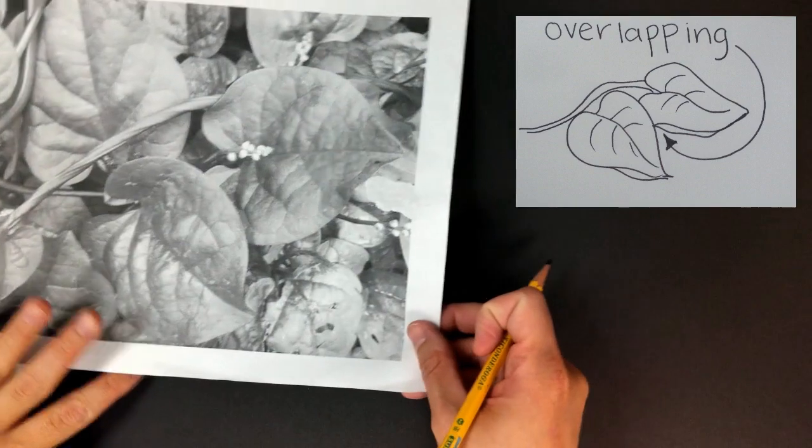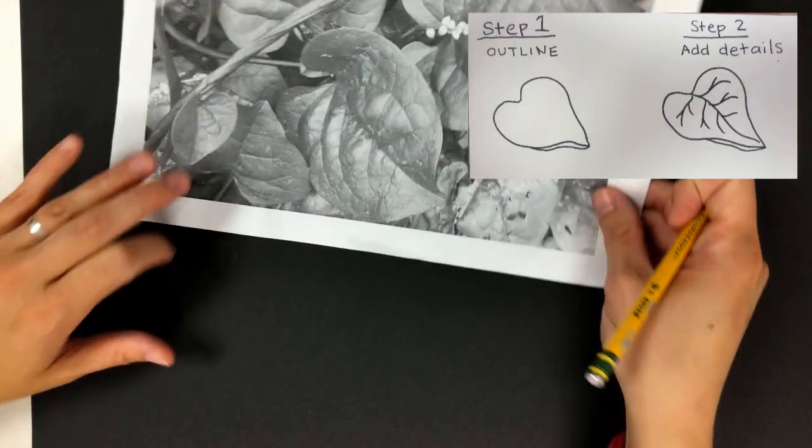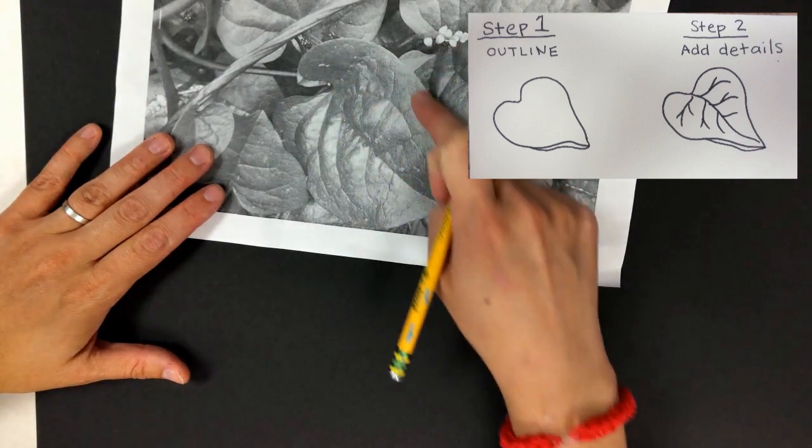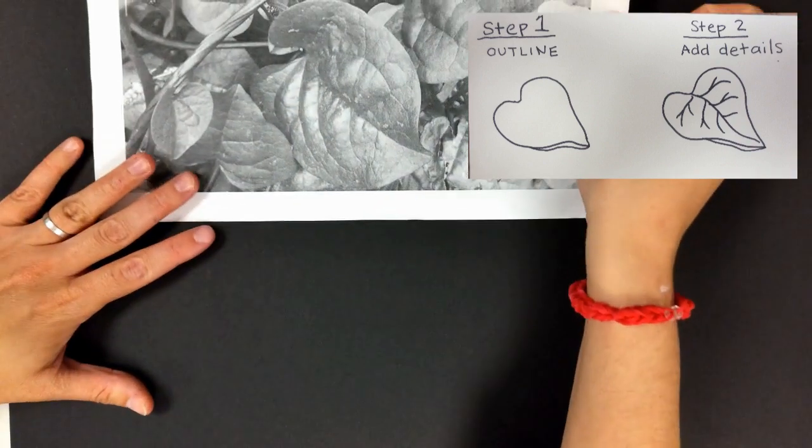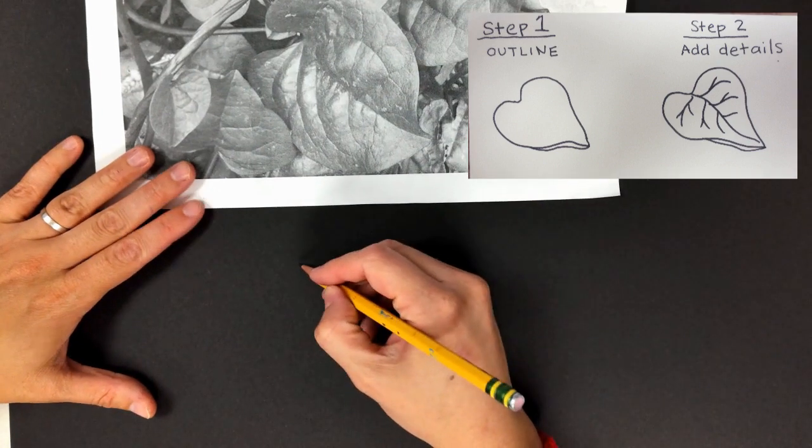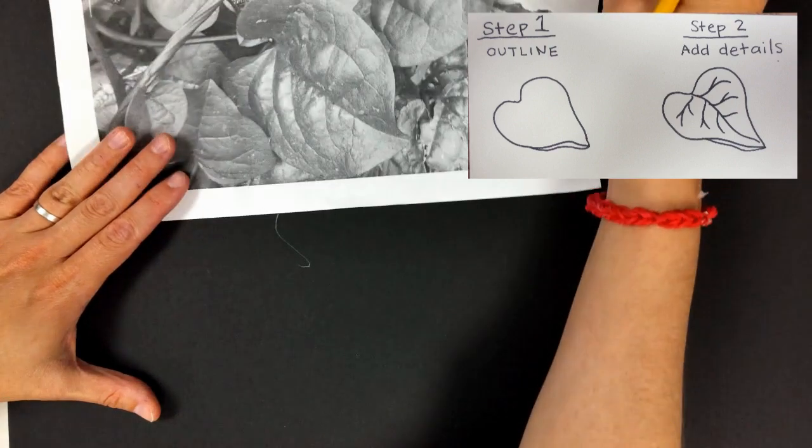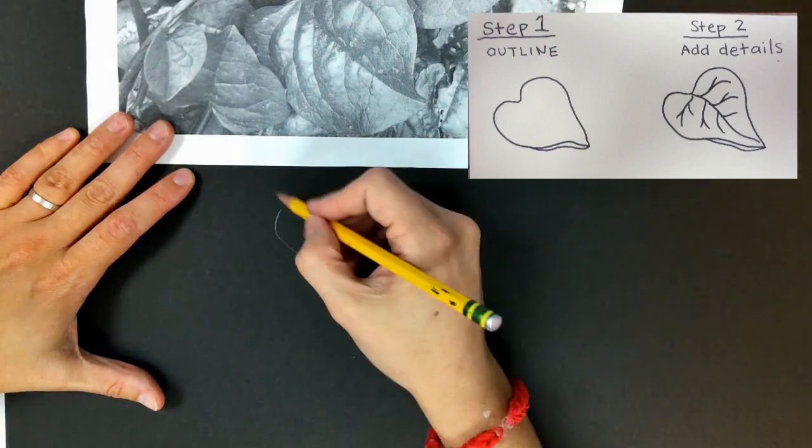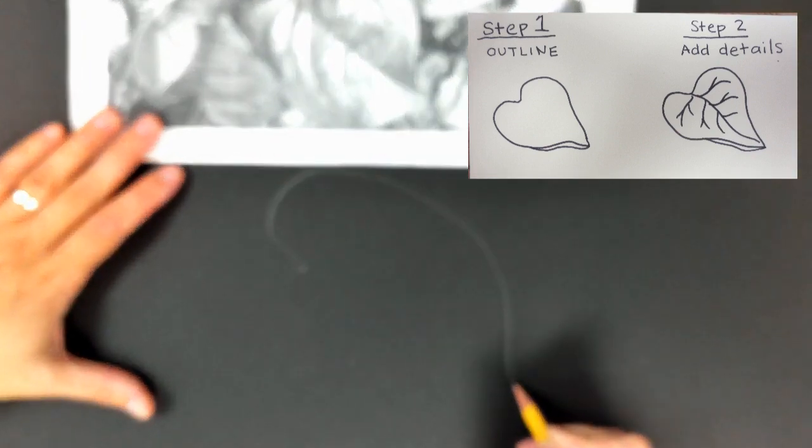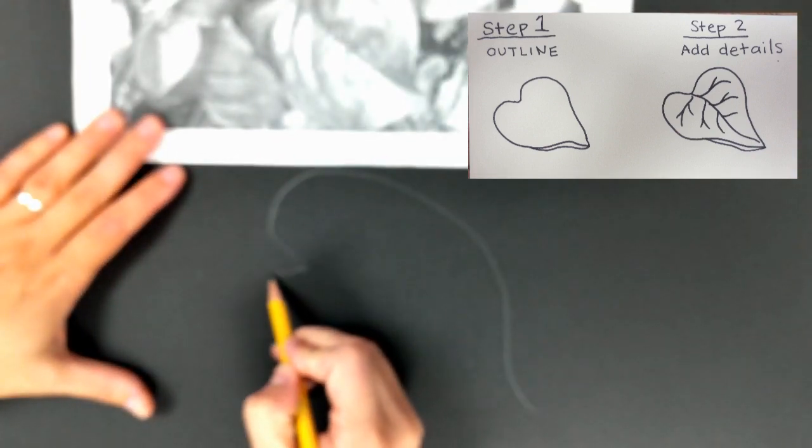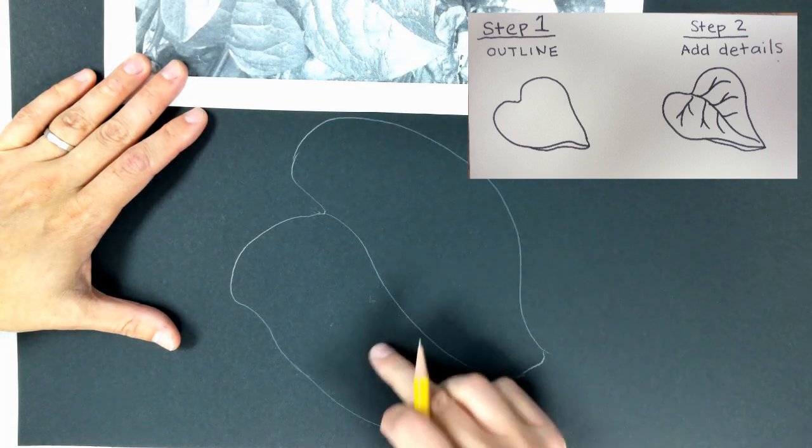So when I'm starting I am going to be using that contour line. I'm going to start by drawing the outside of it first and then I'm going to fill it in with all those little veins and details. So I'm going to start big and go for the outside. And then I'm going to fill in with the inside veins.